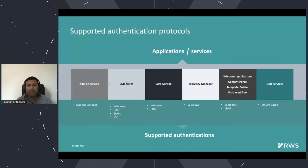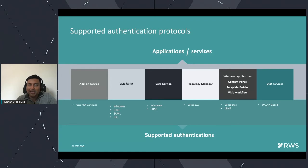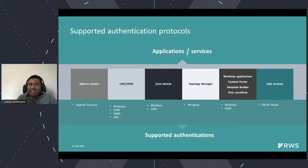This is essentially the fragmented stack: CME and XPM support Windows, LDAP, and SAML; Core Service only supports Windows and LDAP; Topology Manager supports only Windows; Windows applications like Content Porter and Template Builder only support Windows and LDAP — they don't support SAML. DXD services use bearer token authentication. You can see that each service was developed at a different time. The new DXD microservices were developed when bearer tokens were known to be the way forward, so we only added that. But older applications started with Windows and we had to keep backwards compatibility, then added additional support on top.